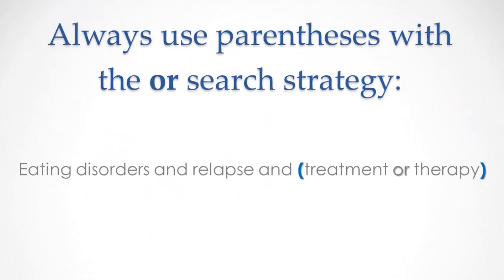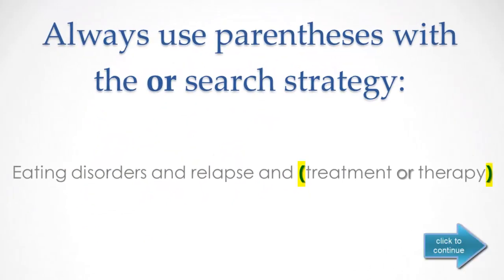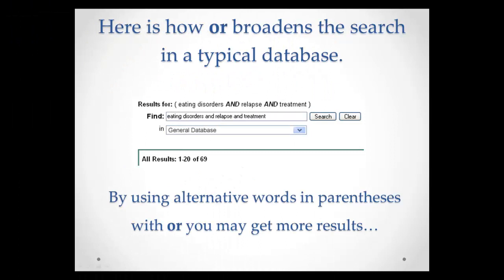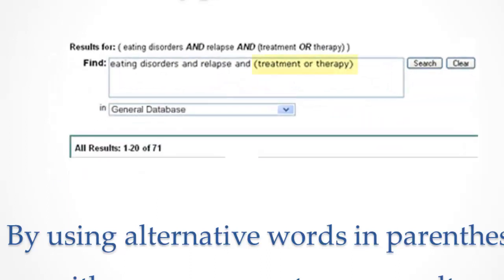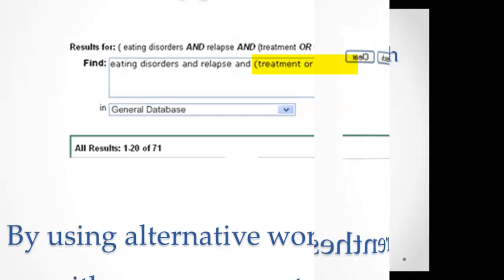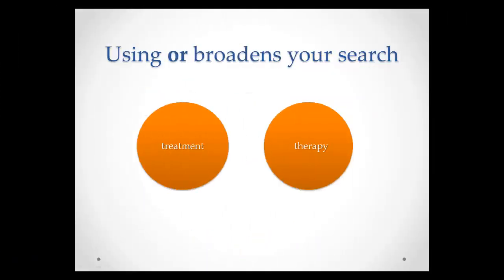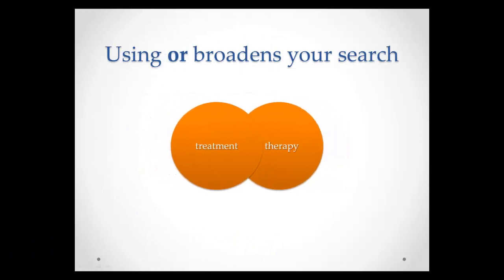Remember, always use parentheses with the OR search strategy. Here is how OR broadens the search in a typical database. Our earlier search for eating disorders AND relapse AND treatment found 69 results. By using alternative words in parentheses with OR, such as treatment OR therapy, we now have 71 results.